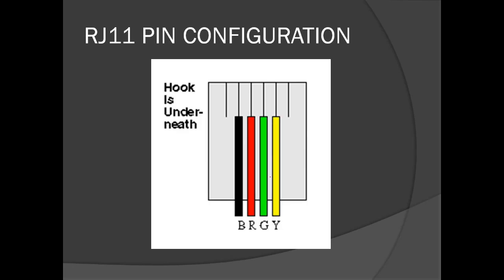For the pin configuration, the telephone line has four colors: black, red, green, and yellow. That's the RJ11 pin configuration. For analog phones, if the orientation of the wires is reversed — for example, if the green and red are interchanged — it will still function. There's no polarity in terms of the pin configuration, but the standard is black, red, green, and yellow.